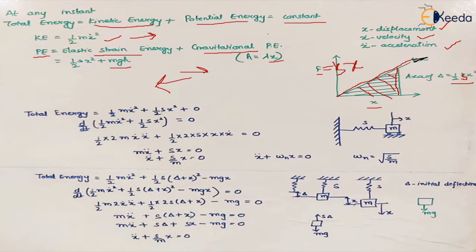These are the two energy components considered, assuming no damping. Since total energy is constant, let's first take the horizontal case. In a horizontal system there is no gravitational potential energy, so the equation becomes: one-half m x-dot-squared plus one-half s x-squared equals a constant. To find the natural frequency, we differentiate this equation with respect to time and equate it to zero.